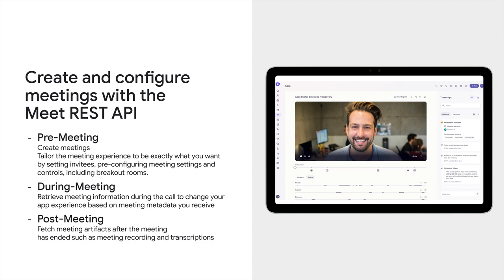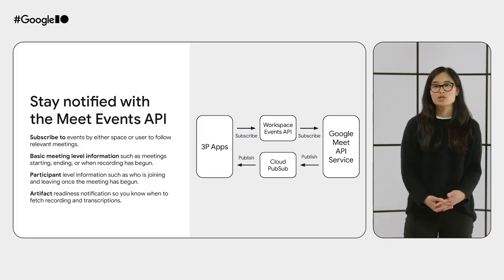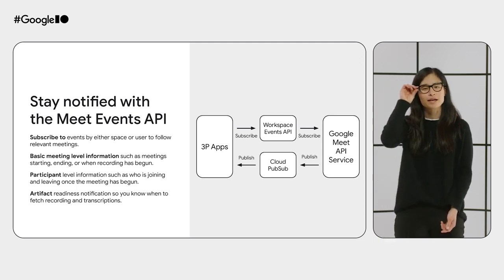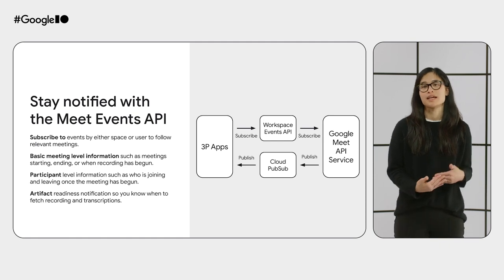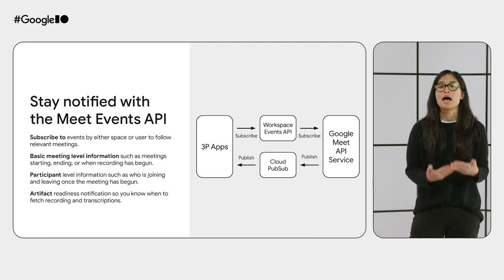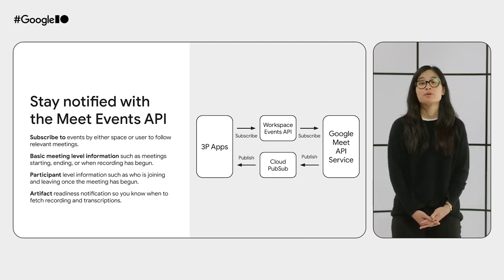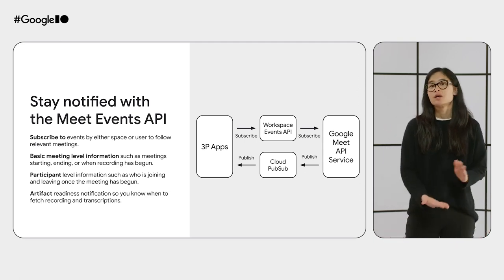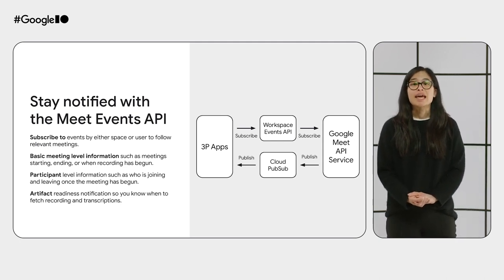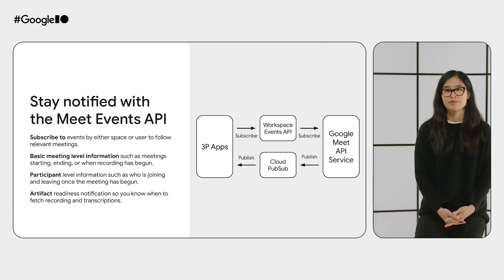Our Events API allows you to know about changes happening with meetings the moment they are changing, so you can turn around and do something either in your UI or with one of our other platform pieces relevant to the change. Potential subscriptions could be when meetings are created, when they've started, when participants join and leave, and when a meeting artifact is ready for you to fetch with our REST API.